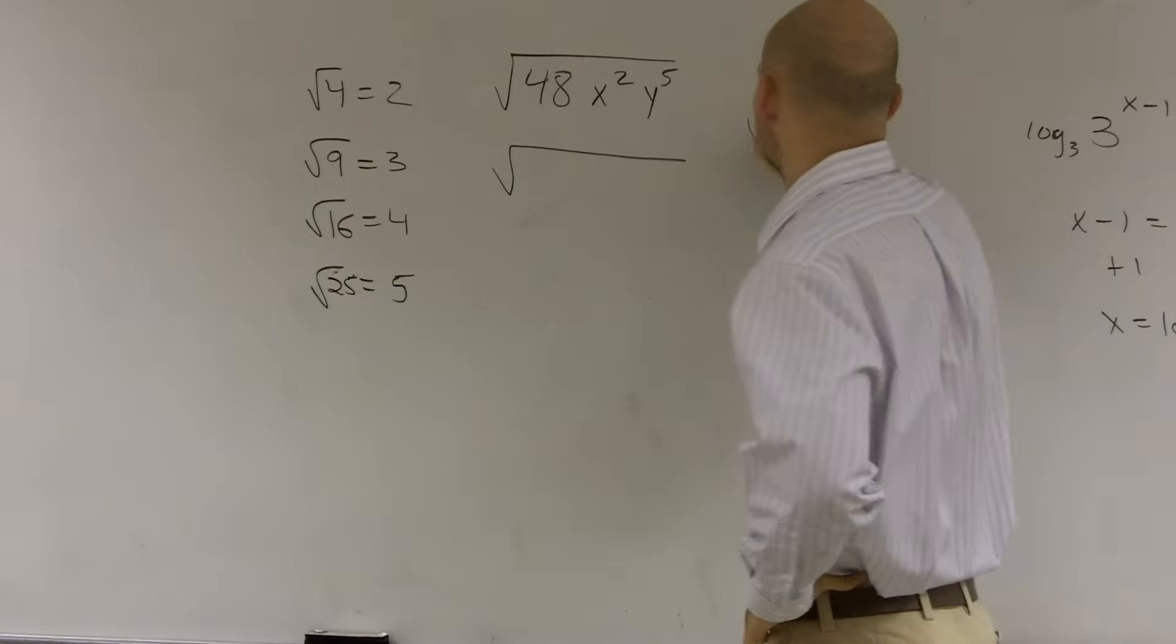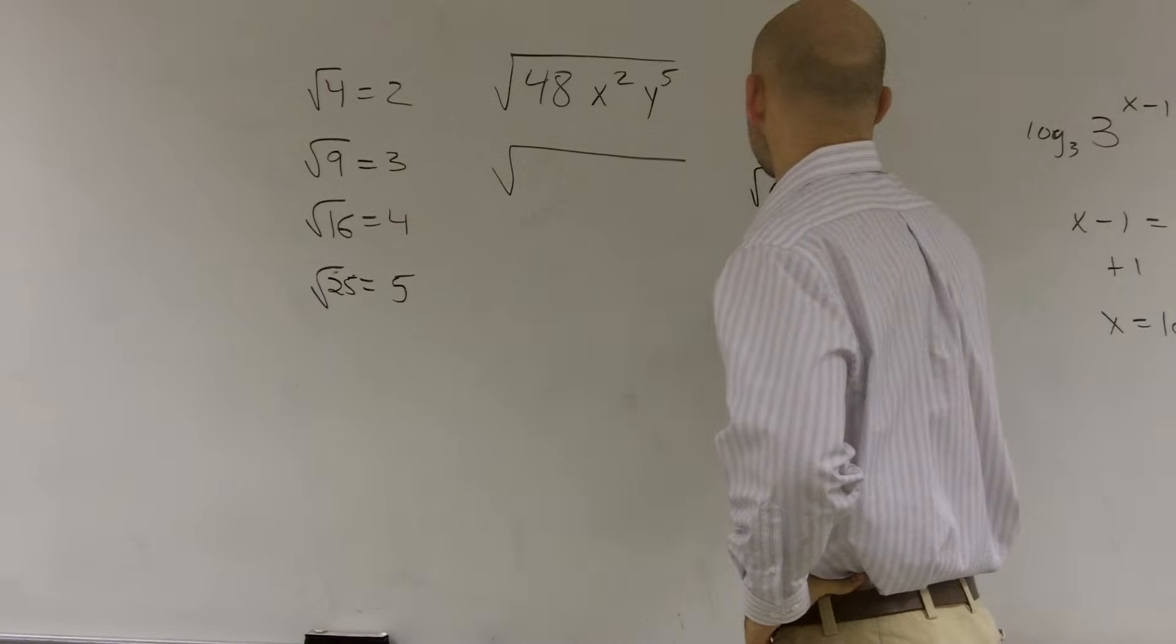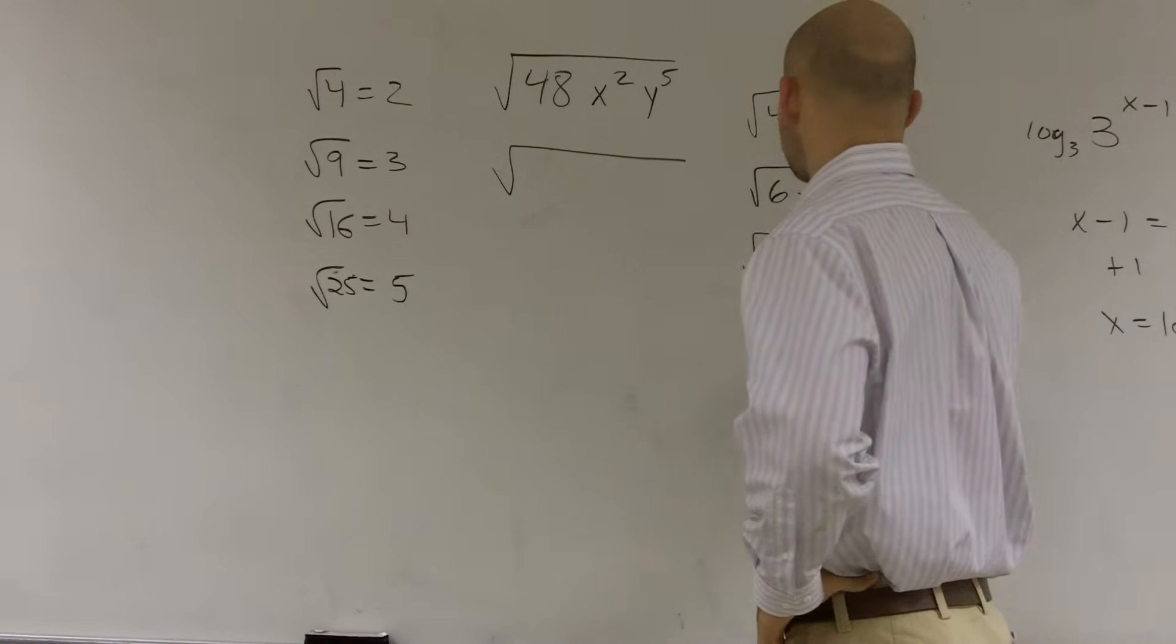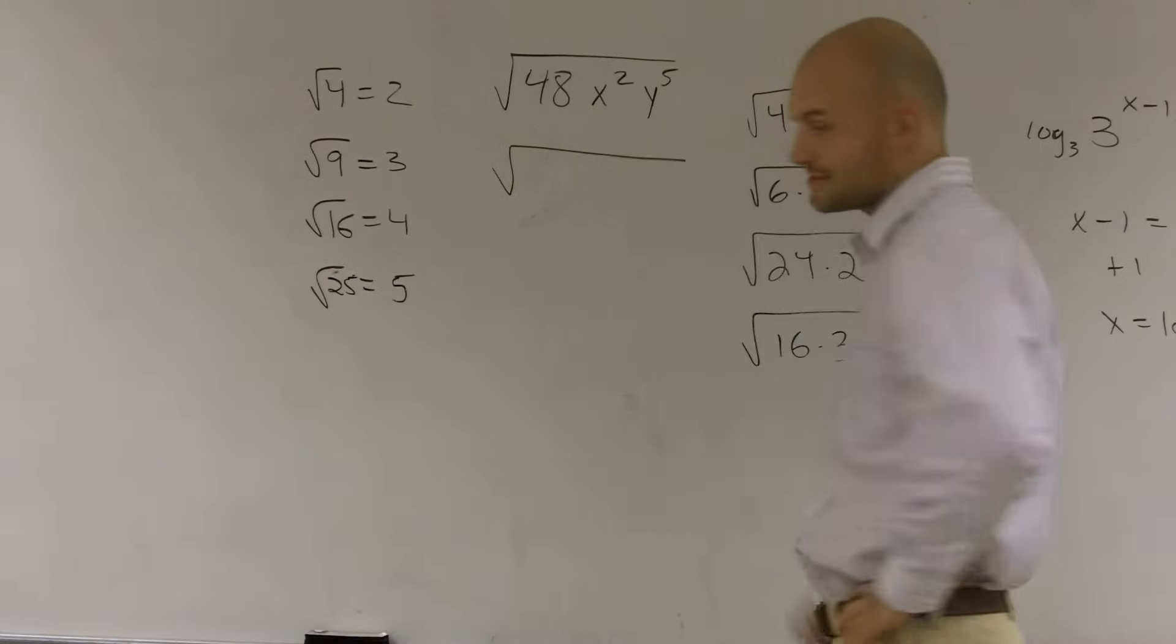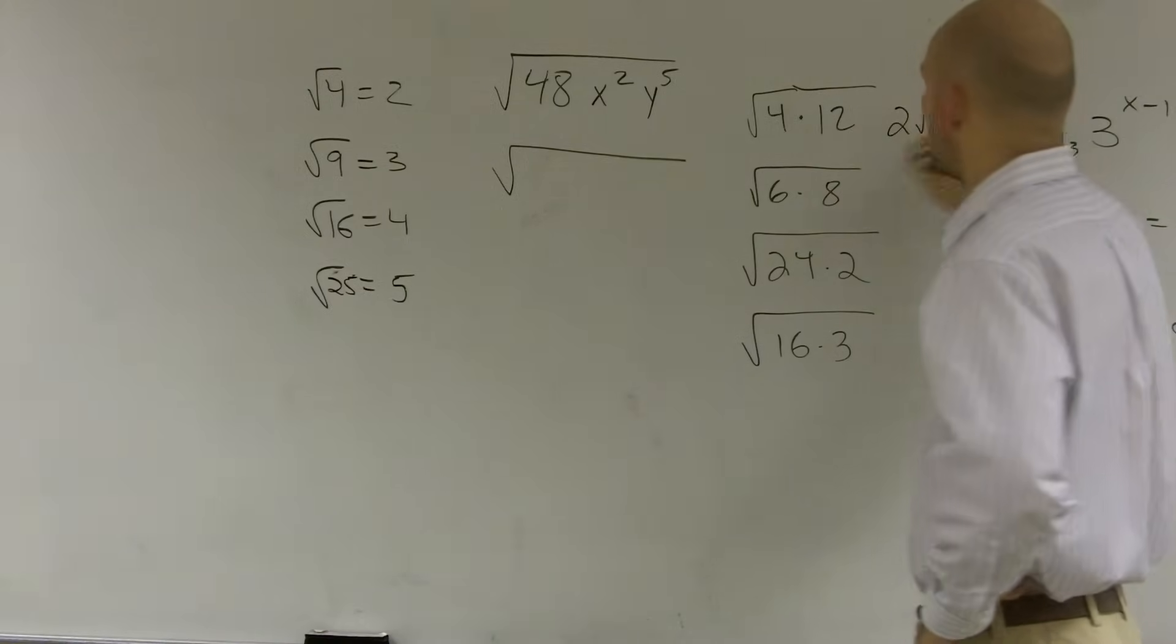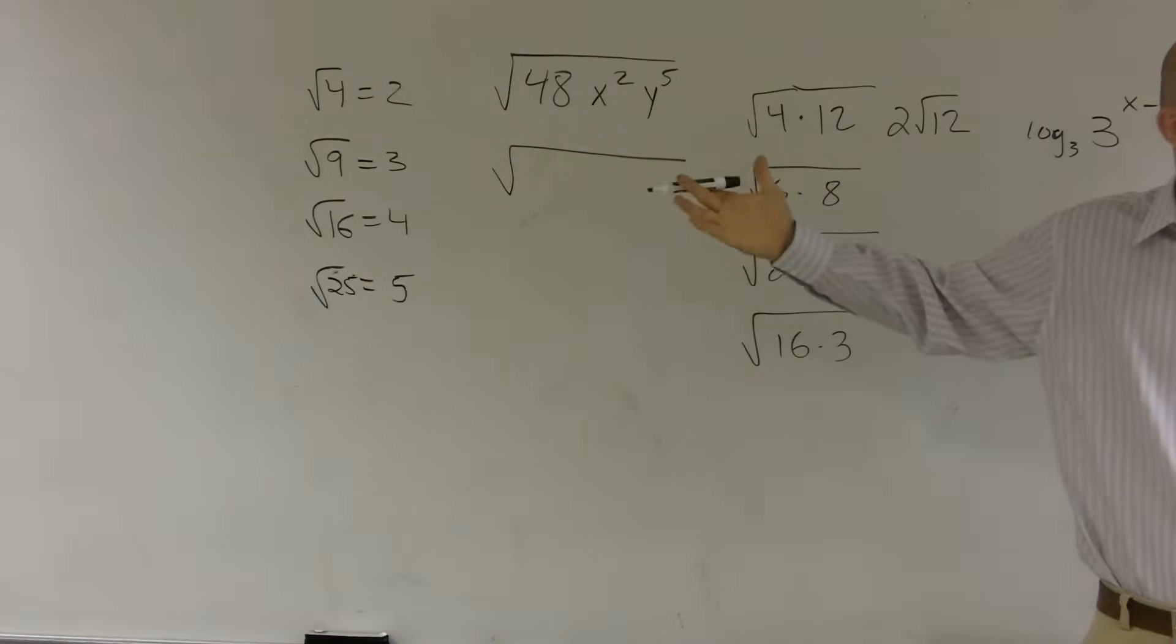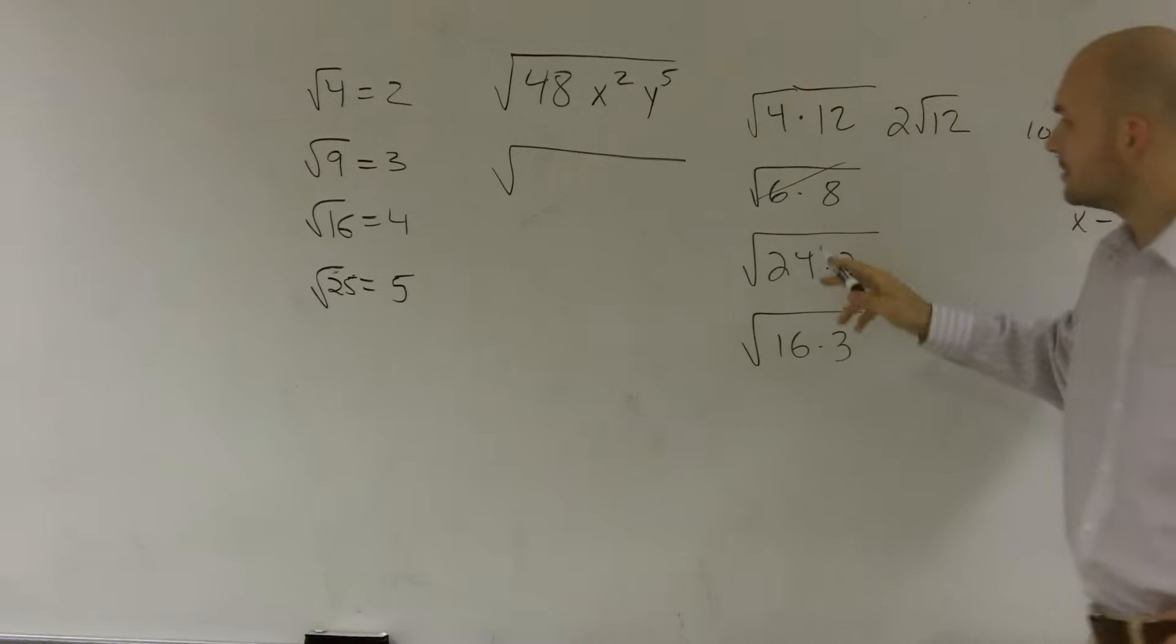So let's try it. You guys had 4 times 12, 6 times 8, 24 times 2, 16 times 3. Those are our options. You could rewrite this as 2 times the square root of 12. The square root of 4 we know is 2. But can I take the square root of 12? No. You wouldn't want to choose 6 and 8 because you can't take the square root of any of them.